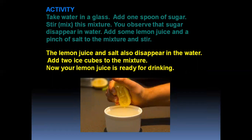Activity: Take water in a glass. Add 1 spoon of sugar and stir it — stir means mix. Mix this mixture. You observe that the sugar disappears in water. Add some lemon juice and a pinch of salt to the mixture and stir it. The lemon juice and salt also disappear in the water. Add 2 ice cubes if you need, or you can avoid it. Now your lemon juice is ready for drinking. You also prepare this in your house and take a photograph and send the pics to me.